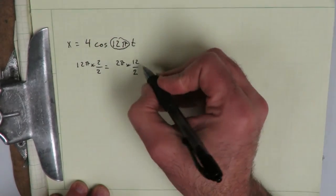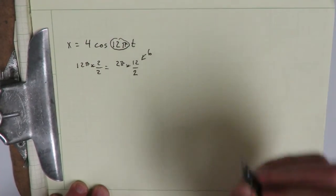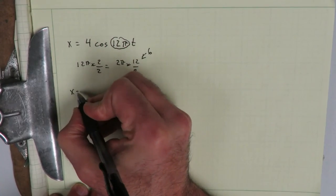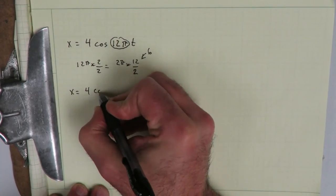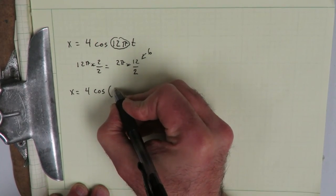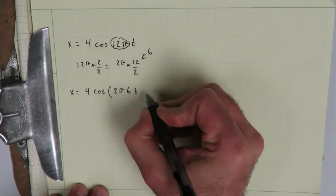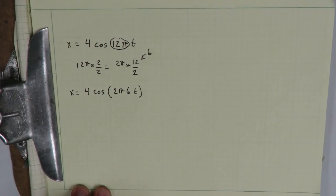So we put this all, which is 6. This is 6. So when we put it all together in a new equation, we get x equals 4 times the cosine of 2 pi times 6 t. And there we are.